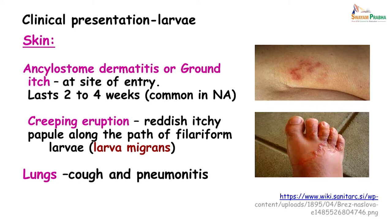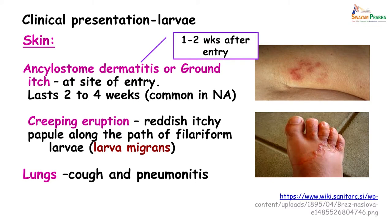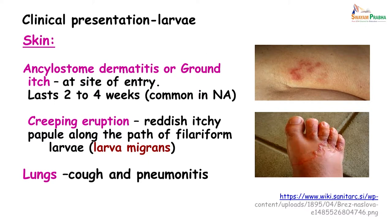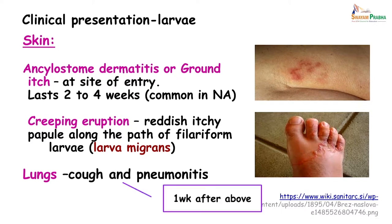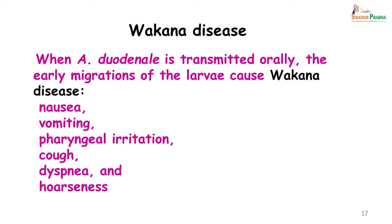These larvae, after producing skin lesions 1 to 2 weeks after entry, then burrow deeper into the subcutaneous venules, travel to the heart, and then to the lungs. When they reach the lungs they produce cough and pneumonitis due to tracheal irritation as the larva travels up the trachea, occurring about 1 week after the skin symptoms. Wakana disease, caused by ingested Ankylostoma duodenale larvae, is characterized by nausea, vomiting, pharyngeal irritation, cough, dyspnea, and hoarseness of voice.